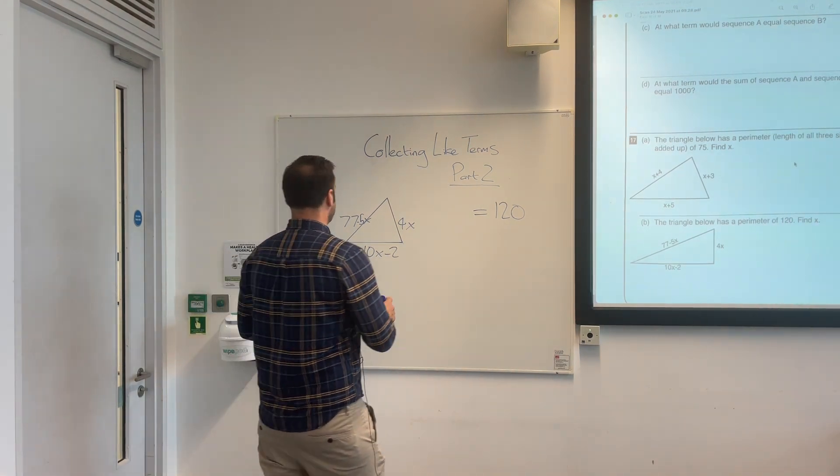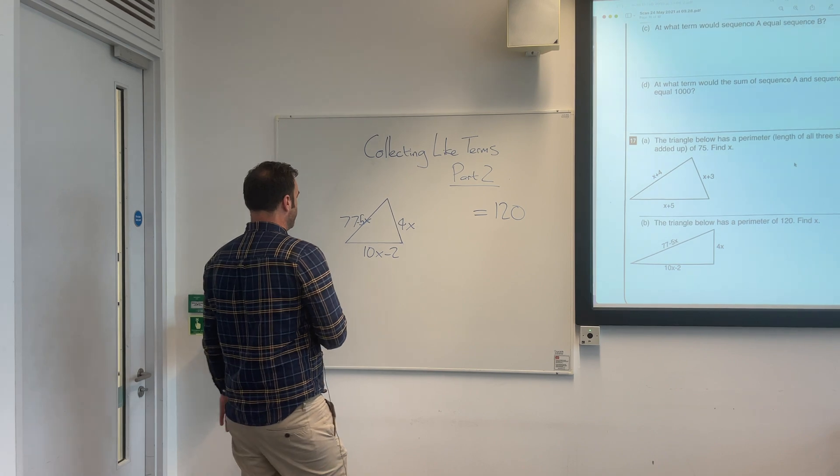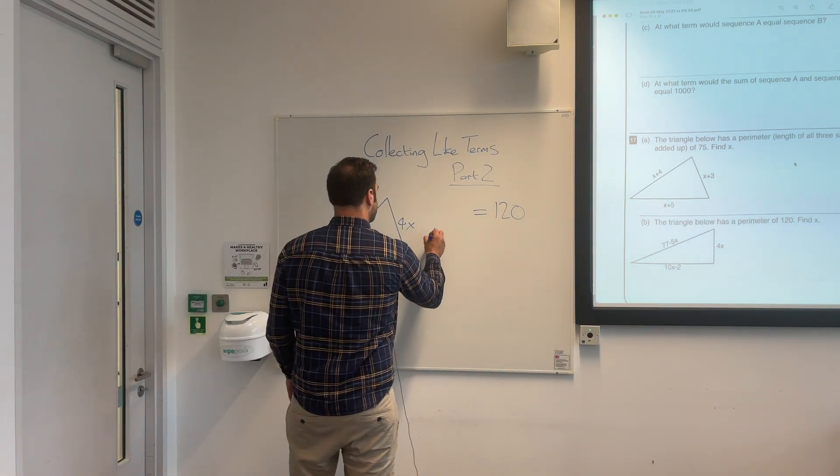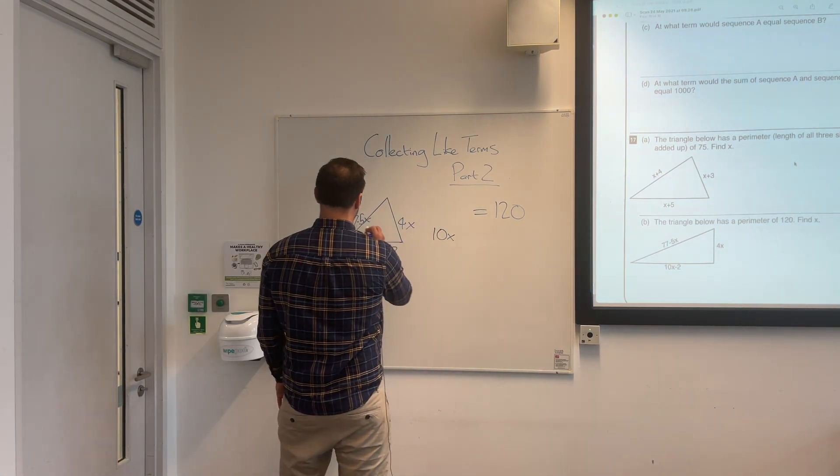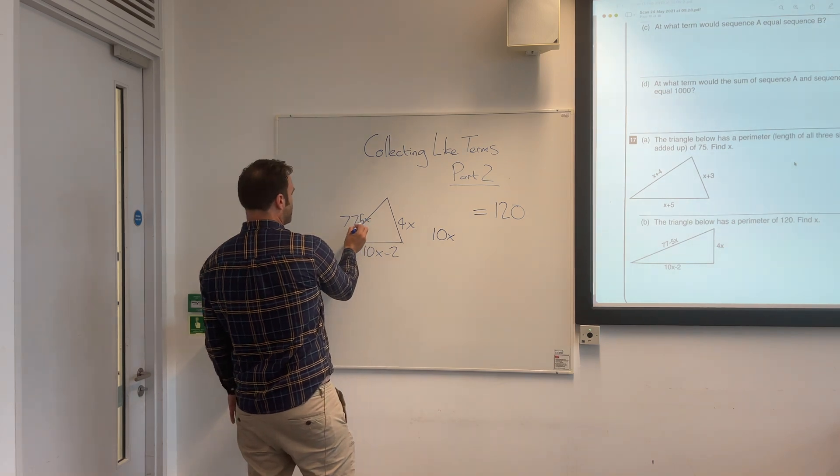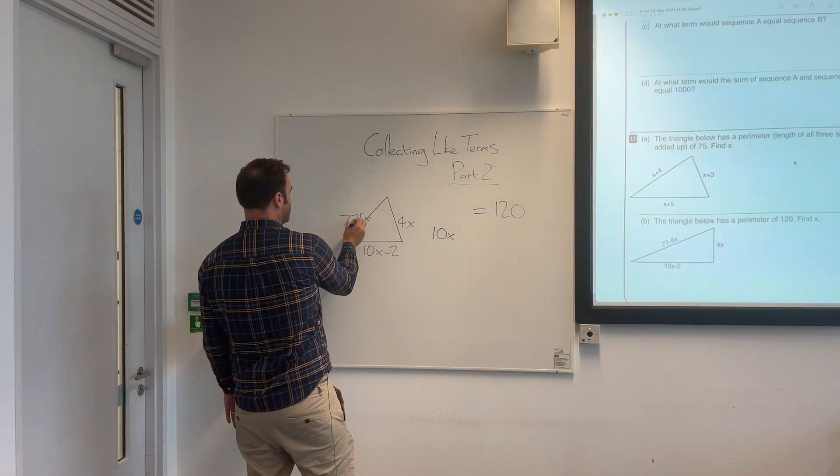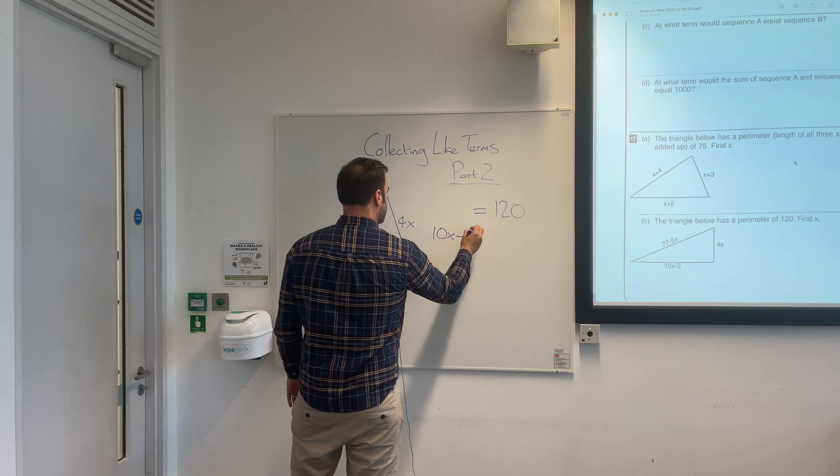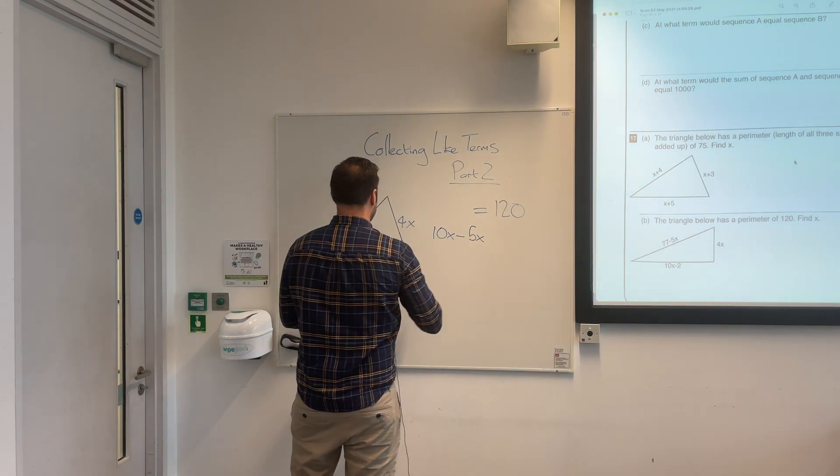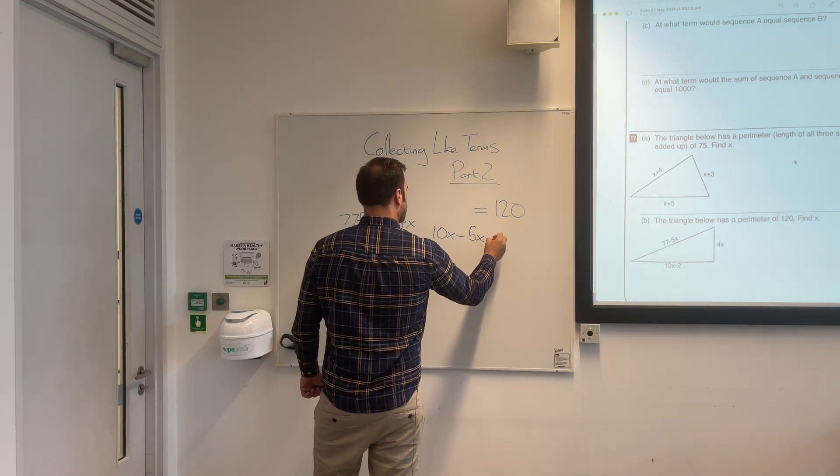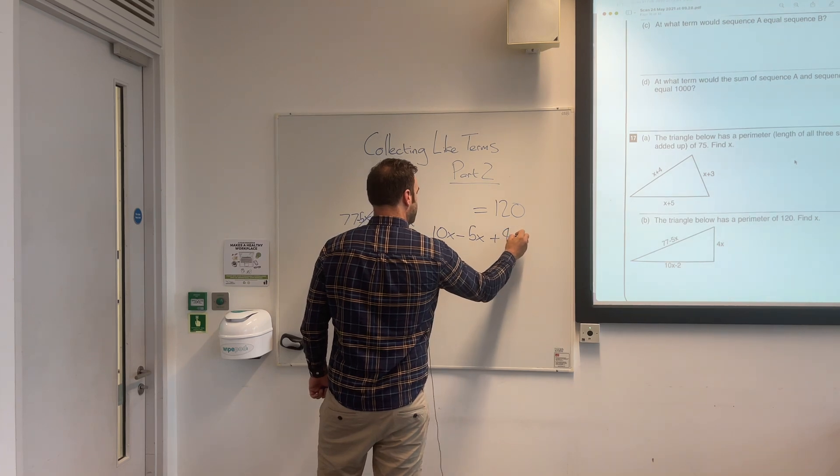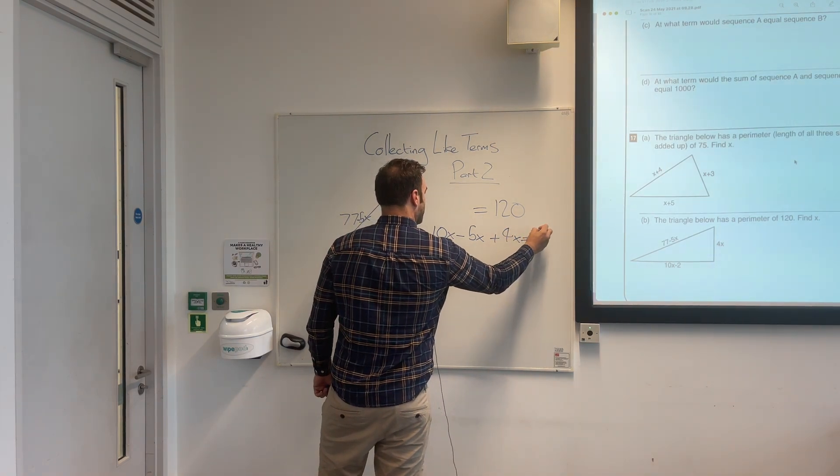So the first thing I would do is collect the x's together. We've got 10x and we've got minus 5x. Always go by the symbol before the number. So you've got minus 5x plus 4x. That equals 9x.